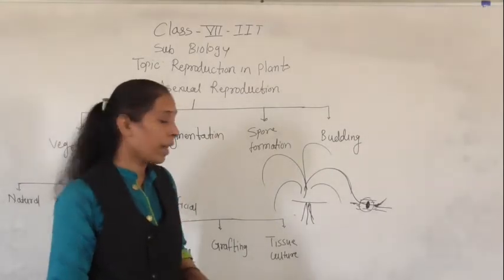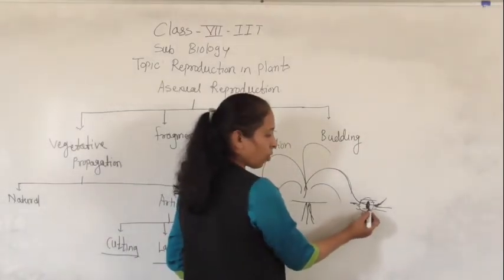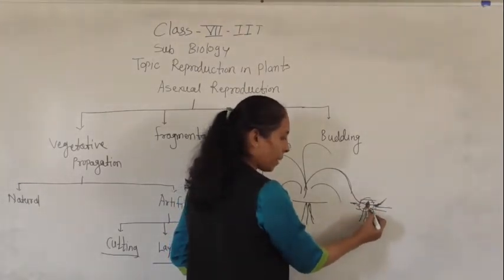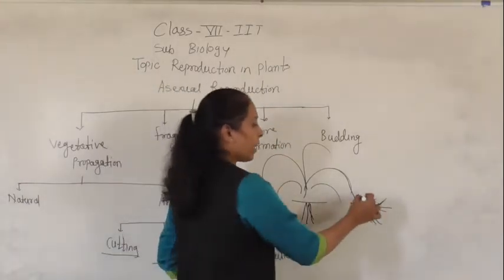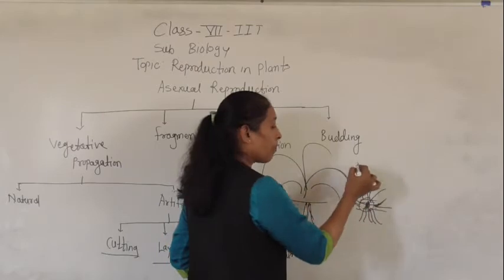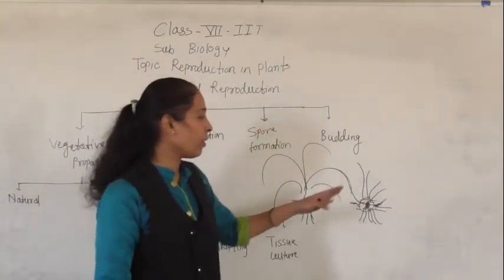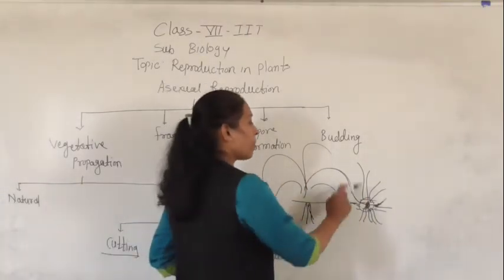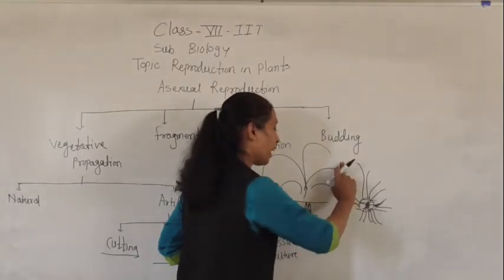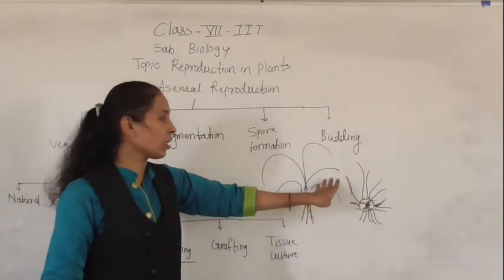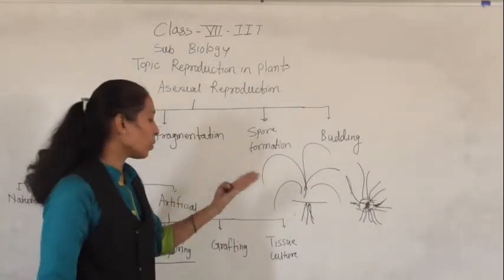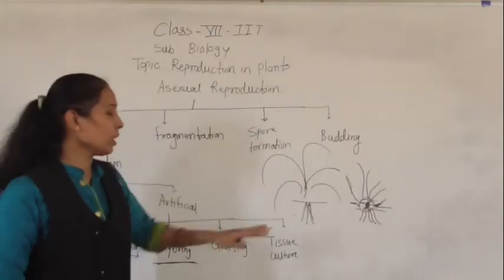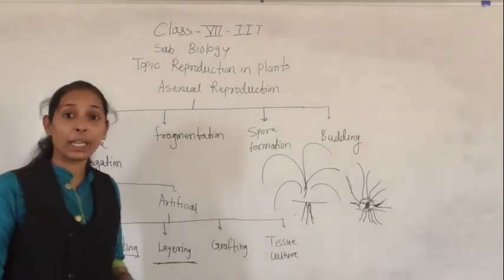After a certain period of time, the portion covered with soil where we removed the bark starts developing roots, and that portion starts to grow as a separate plant. When roots appear and this part starts to grow as a separate individual, we cut this branch from the main plant. This method is called layering, and it is useful for jasmine and rose.